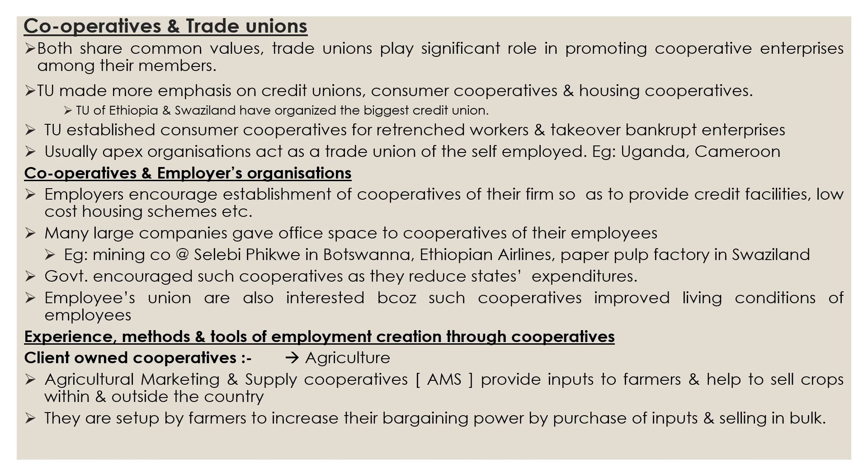Theoretically, Agricultural Marketing and Supply Cooperatives are set up by farmers to increase their bargaining power by purchasing inputs in bulk and jointly selling crops. In some countries, AMS cooperatives enjoy monopoly in supply and marketing as there are no other units operating in this area, and farmers become full-time members. Such cooperatives gradually degenerated into governmental agencies and these monopoly traders were strongly protected and subsidized by the state.